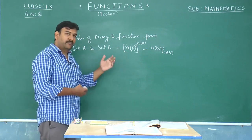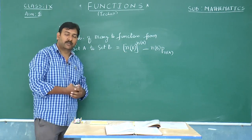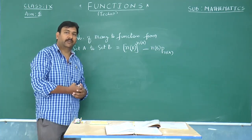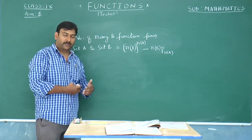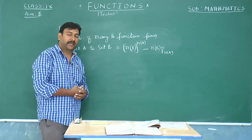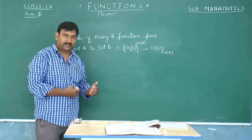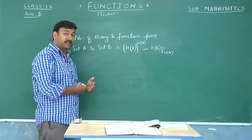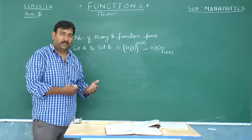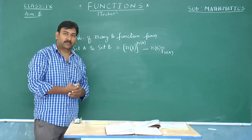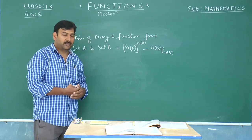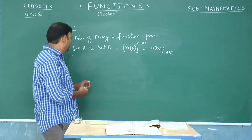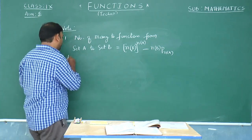Unlike one-to-one functions, which are only possible when n(A) is less than or equal to n(B), there is no condition to check whether many-to-one functions are possible or not. Let us now go through some examples.